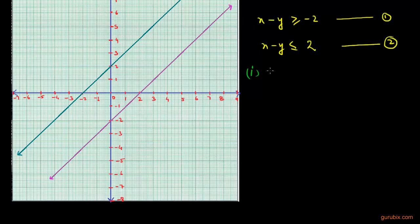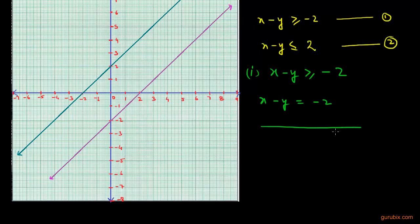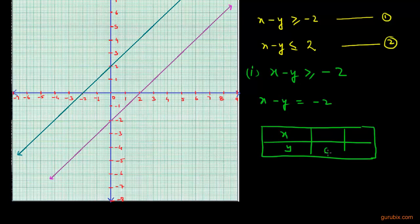Now we shall solve inequation number 1: x minus y is greater than or equals to negative 2. We convert this inequation into an equation: x minus y equals negative 2. We find two solutions — if y equals 0, then x equals negative 2; if x equals 0, then y equals 2. Now we shall plot these two points A and B on the graph.